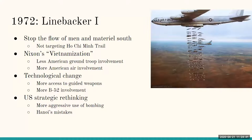Linebacker 1 saw technological change — this was the first time guided weapons really became useful in war, such as laser-guided bombs and missiles. It also saw much more intense use of the famous B-52, pictured here, which was by far one of the best strategic bombers ever invented. It was generally a strategic rethinking on the part of the U.S. Linebacker 1 was much more aggressive and took advantage of Hanoi's primary mistake during this part of the war, which was to fight war the way the U.S. fights war.